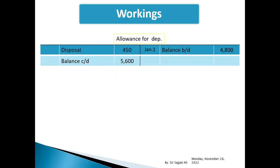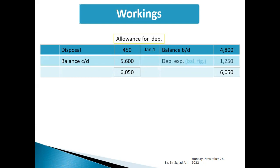Allowance for depreciation account: debit side total six thousand fifty, balance brought down four thousand eight hundred, less current year depreciation expense one thousand two hundred fifty.